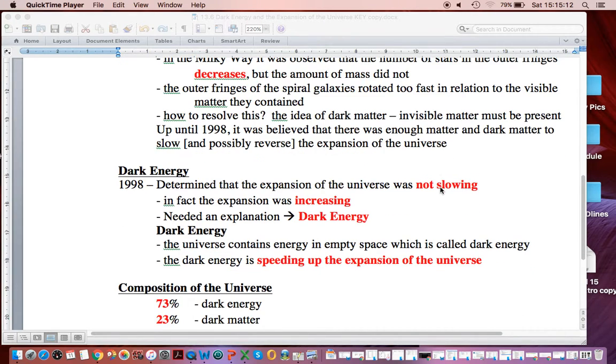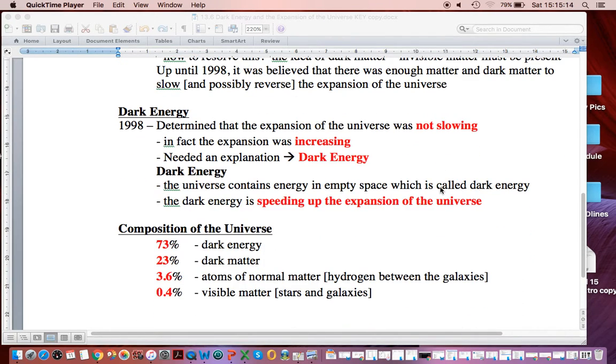Now let's just finish this section off for now by looking at the composition of the universe. So 73% of the universe is dark energy. 23% is dark matter. So 96% of the universe is stuff we really haven't been able to detect. But it helps explain how the universe's expansion is accelerating.